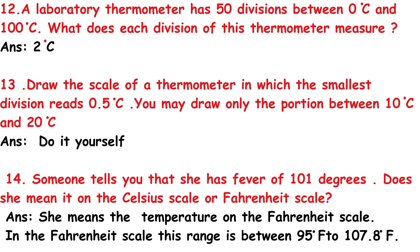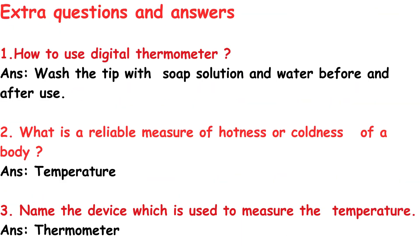Question 13: Draw the scale of a thermometer where the smallest division reads 0.5°C, showing the portion between 10°C and 20°C. Question 14: Someone says she has a fever of 101° — is it Celsius or Fahrenheit? Answer: She means Fahrenheit. The normal range on the Fahrenheit scale is between 95°F and 107.8°F.